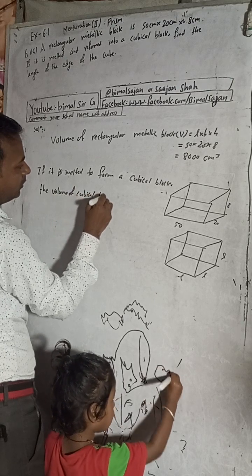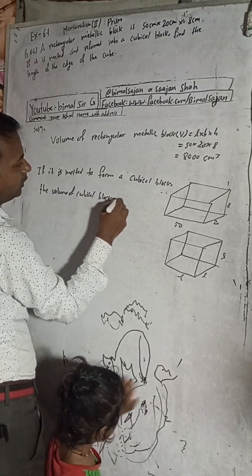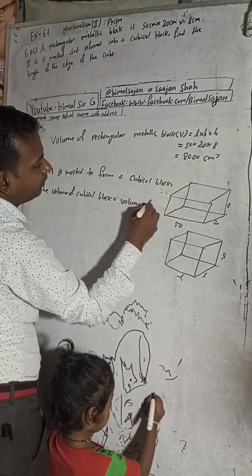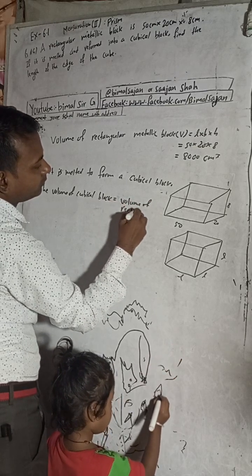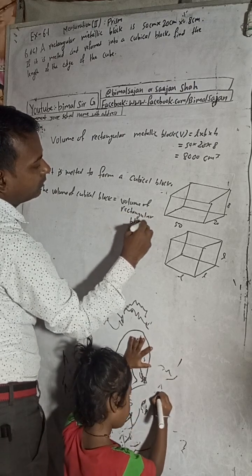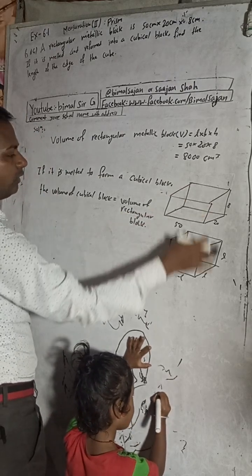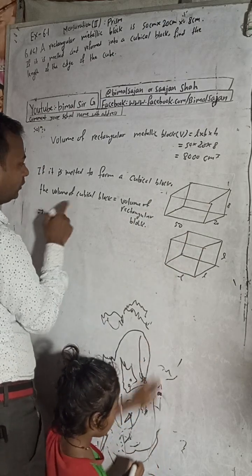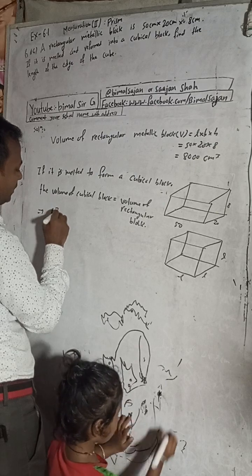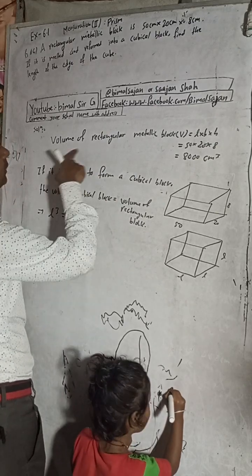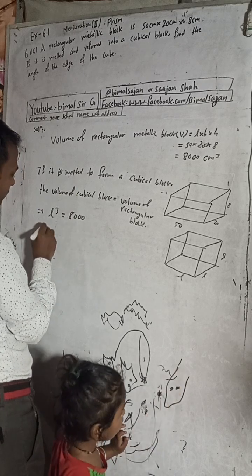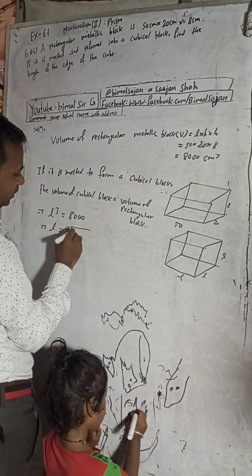The volume of the cubical block is equal to the volume of the rectangular block. The volume formula for a cube is l × l × l, that is l³. And the volume of the rectangular block is 8000, so l³ = 8000, which means l is equal to the cube root of 8000.